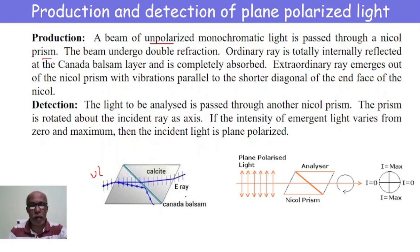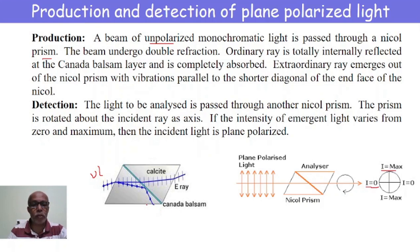This plane polarized light, having vibrations in the plane of the paper, is made to pass through another Nicol prism in order to detect it. The second Nicol prism is rotated about the incident ray axis, and during rotation, if the intensity of the emergent light varies between zero and maximum twice for one complete rotation, the light is said to be completely plane polarized. The first Nicol prism that produces plane polarized light is called the polarizer, and the second Nicol prism that detects the intensity of plane polarized light is called the analyzer.